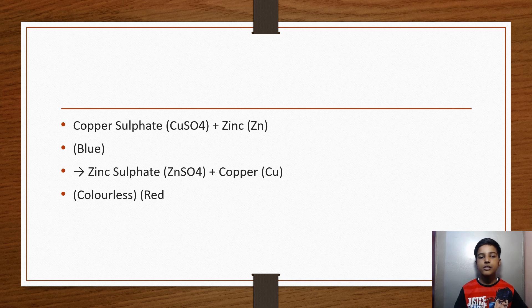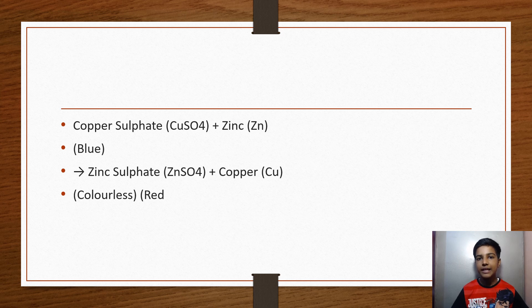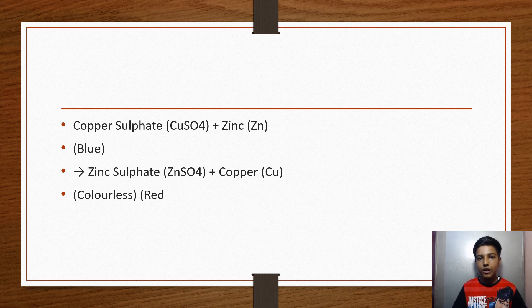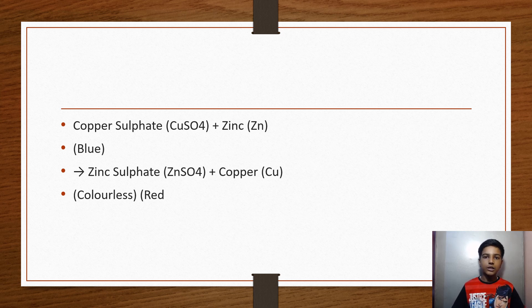For example, take copper sulfate solution — it appears as blue crystals dissolved in water. If you add zinc to it (ZnSO₄ + Zn reaction), zinc is more reactive than copper, so zinc displaces copper: you get zinc sulfate (ZnSO₄) and copper metal. You will notice that the blue color of copper sulfate fades and becomes colorless, because zinc sulfate is colorless.